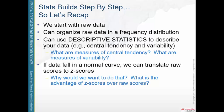And if the data fall into a normal curve, we can translate raw scores into z-scores, which is what we did in the first part of this chapter. We take a raw score and standardize it into a z-score on a scale of standard deviation units away from the mean. A z-score of positive one means that score is one standard deviation above the mean, allowing us to compare scores on different scales.